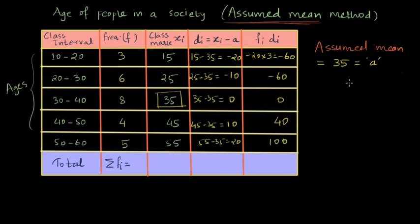So in the next step, what we do is then we sum up the values in the last column, fᵢ dᵢ. So here the summation is minus 60 minus 60. Summation fᵢ dᵢ is equal to minus 60 minus 60 plus zero plus 40 plus 100 and that gives me 20. Let me also sum up all the frequencies. The summation of all the frequencies is 9 plus 8, 17 plus 4, 21 and 21 plus 5 is 26.